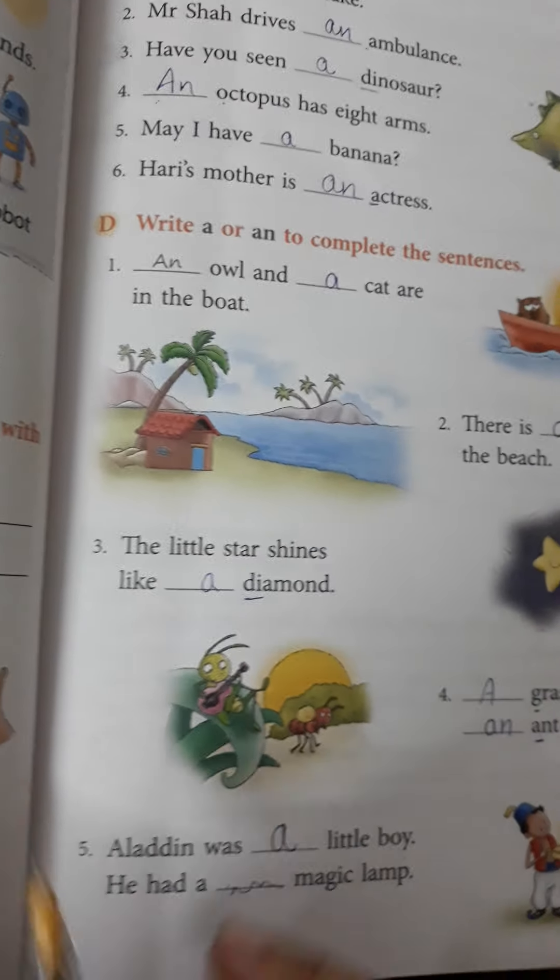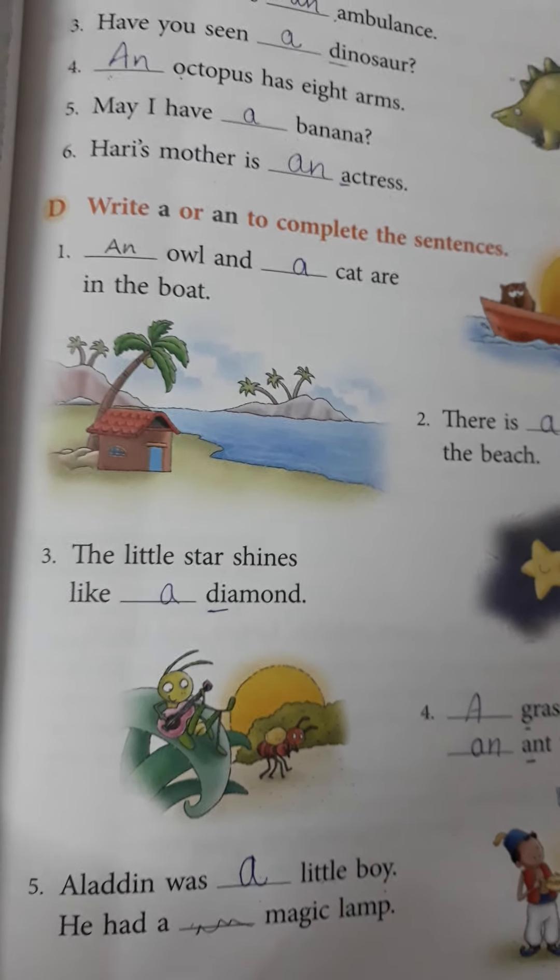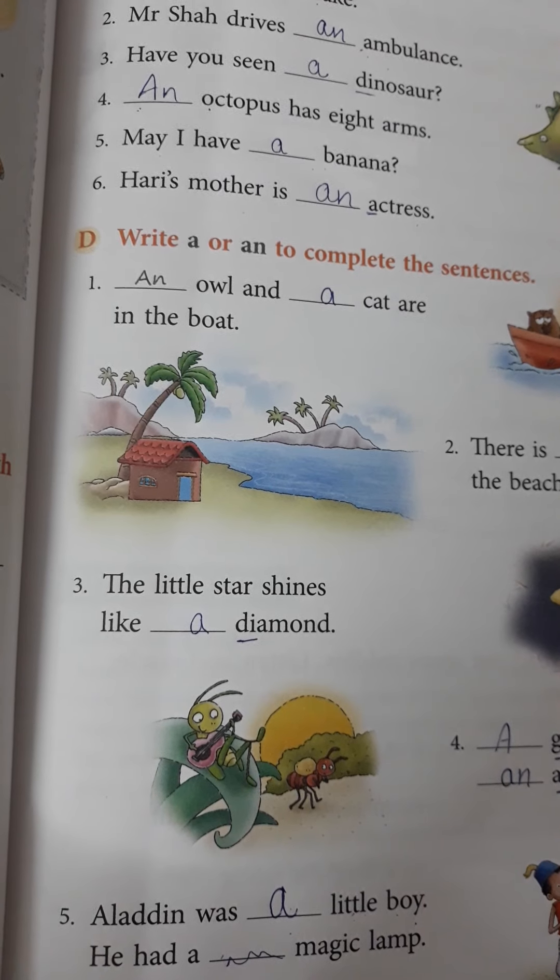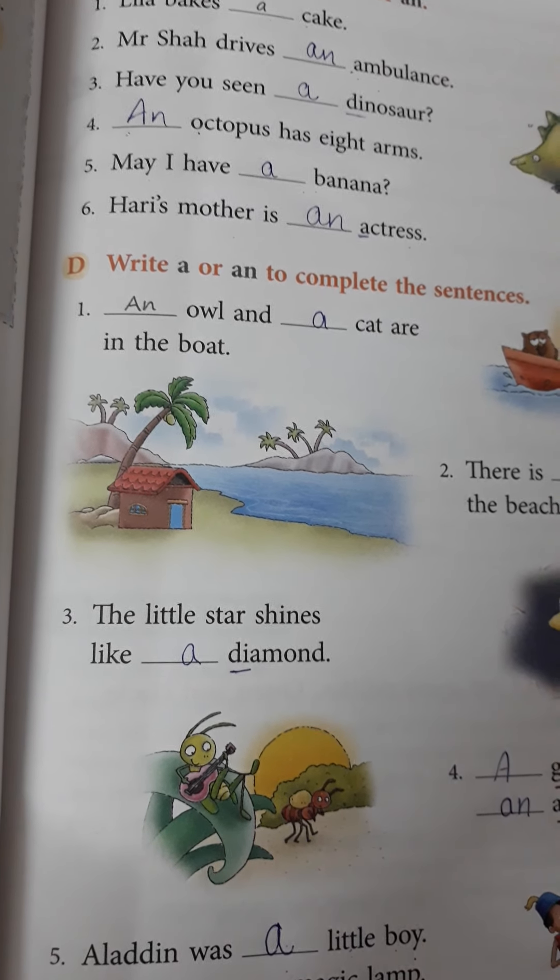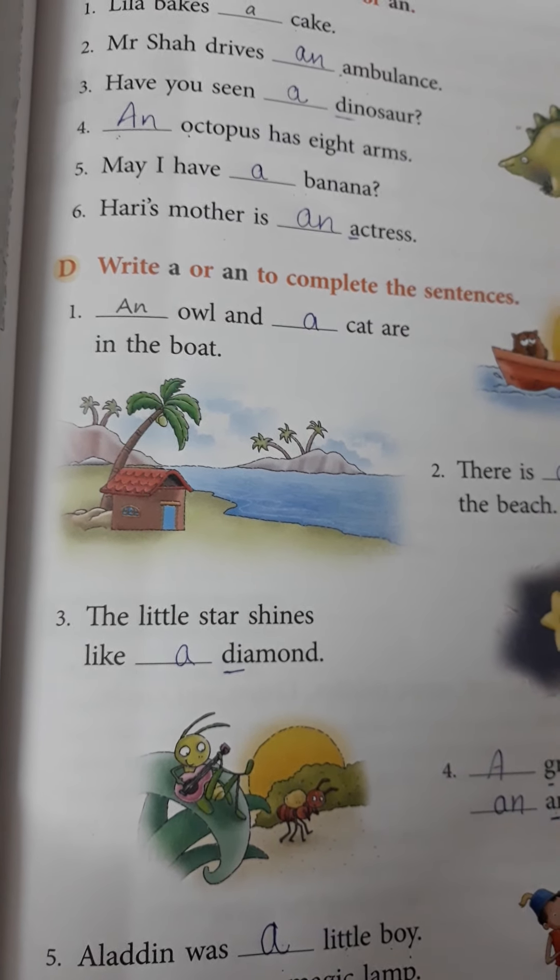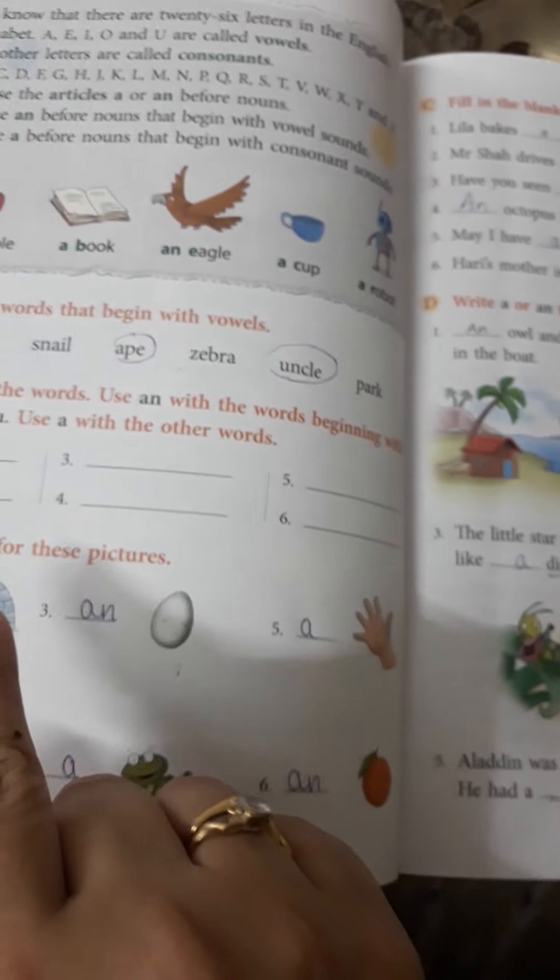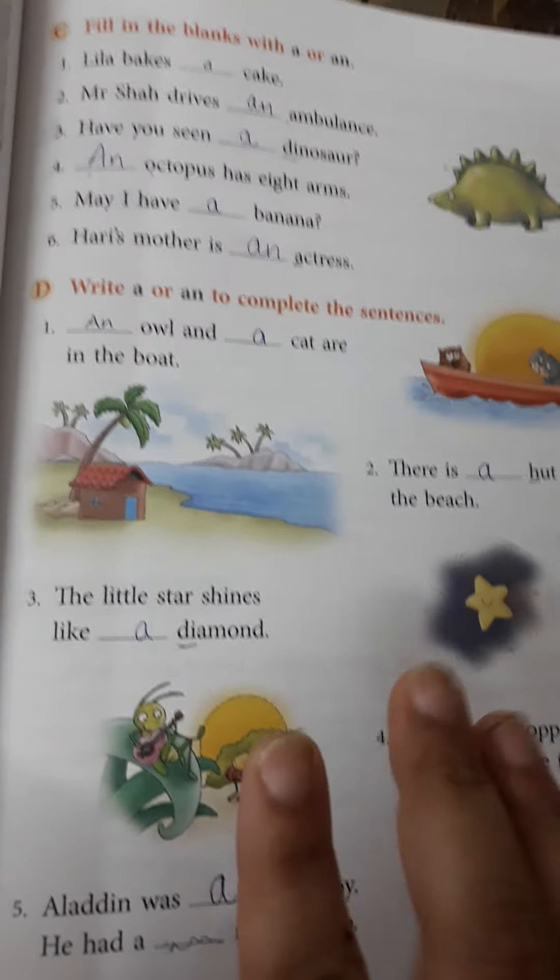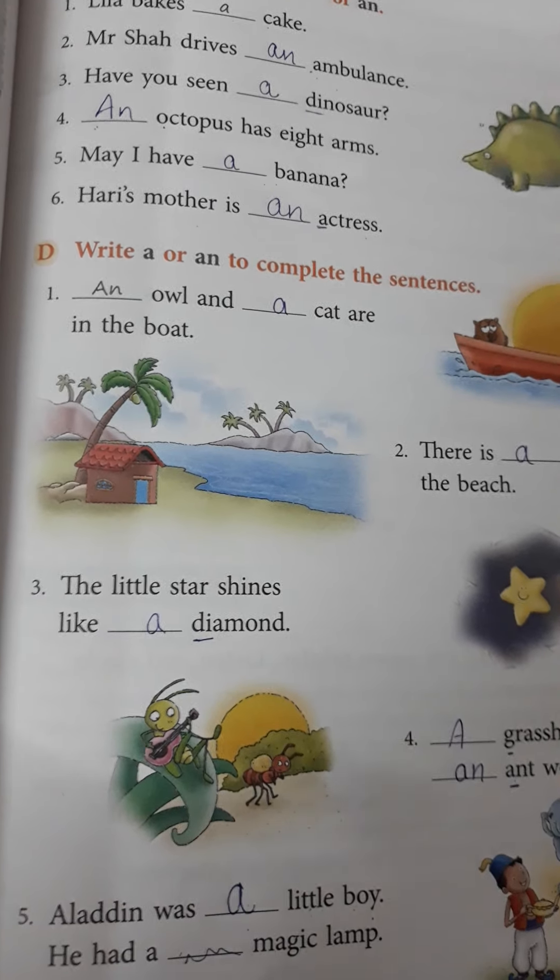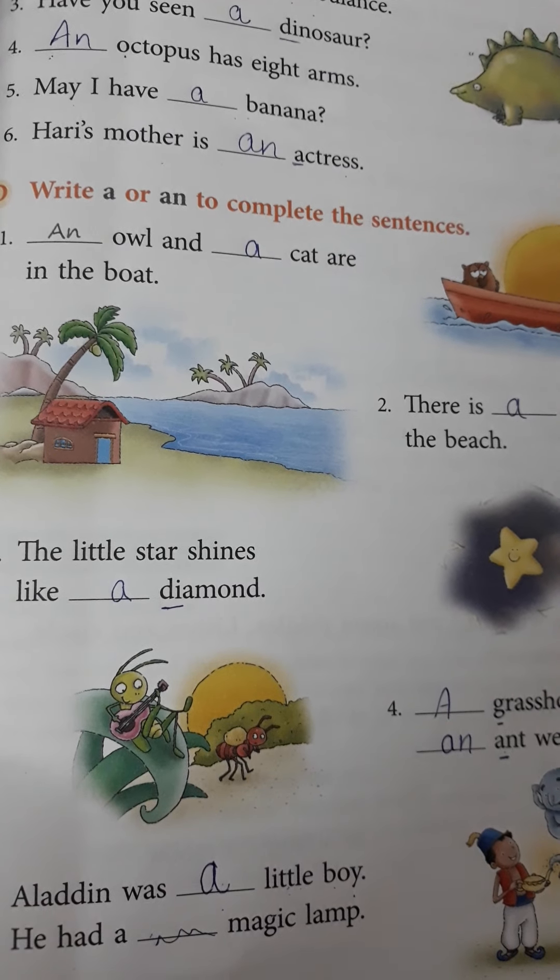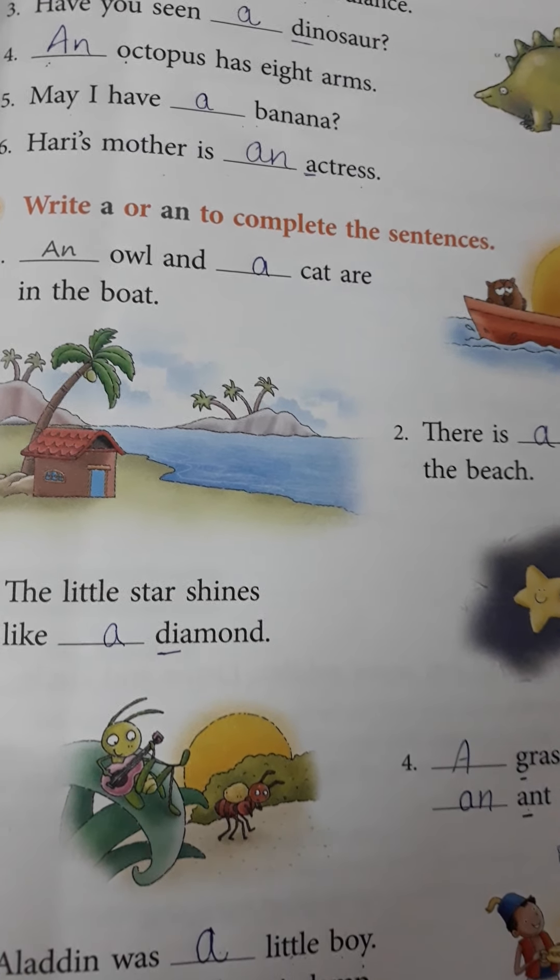So, we will complete till here only. I hope this is very clear to you now. Where we have to write A and AN. So, that's all for today kids. Now, you have to do these two pages by yourself. You have understood how to do them. You can do it on your own now. Okay. That's all for today. Take care of yourself. Bye-bye.